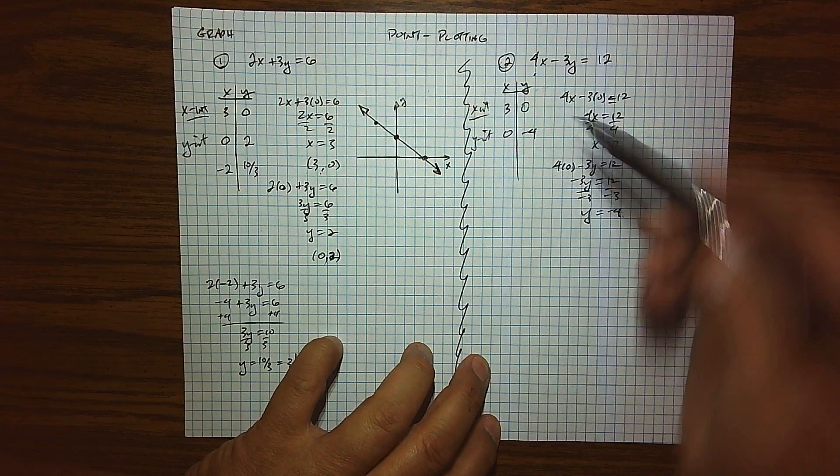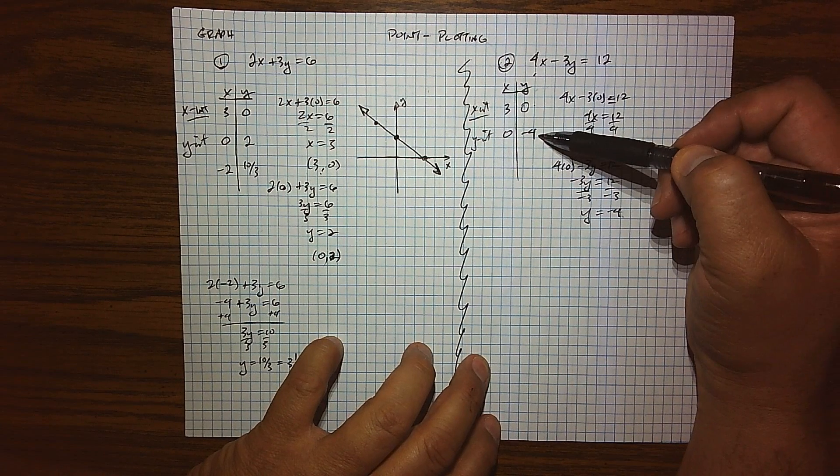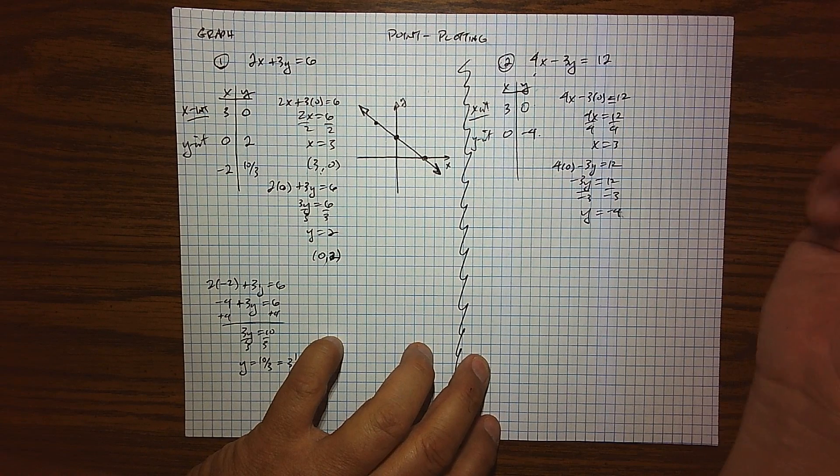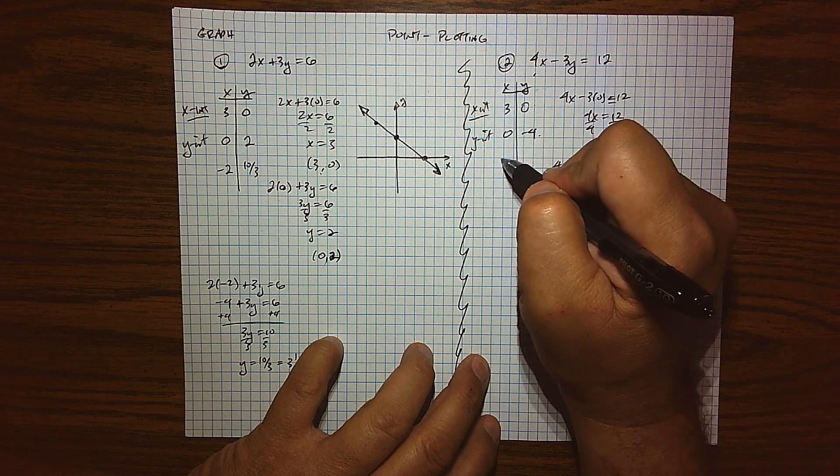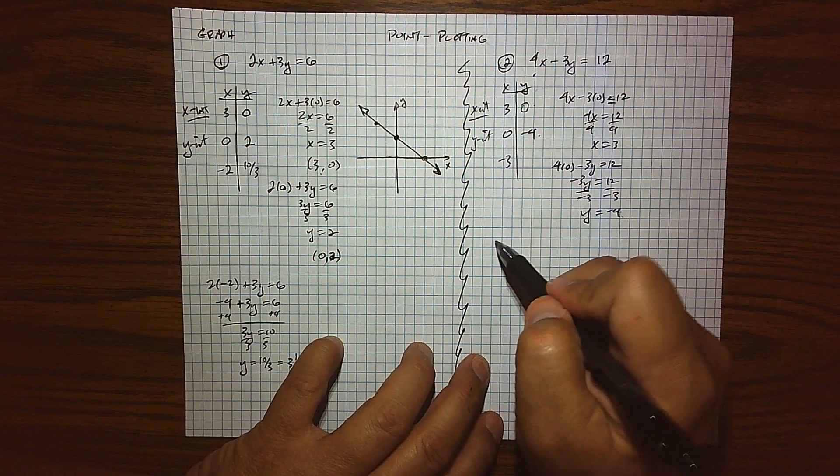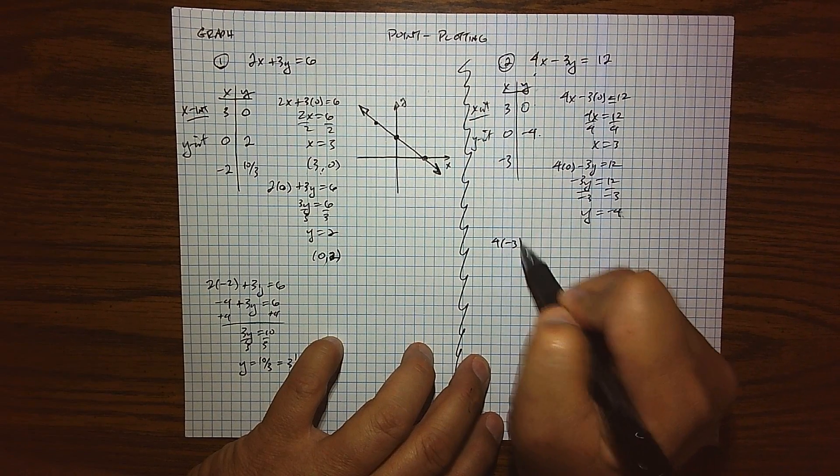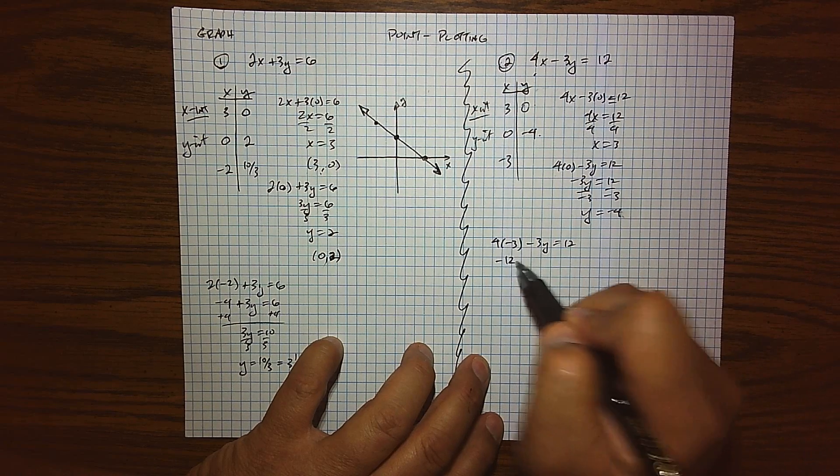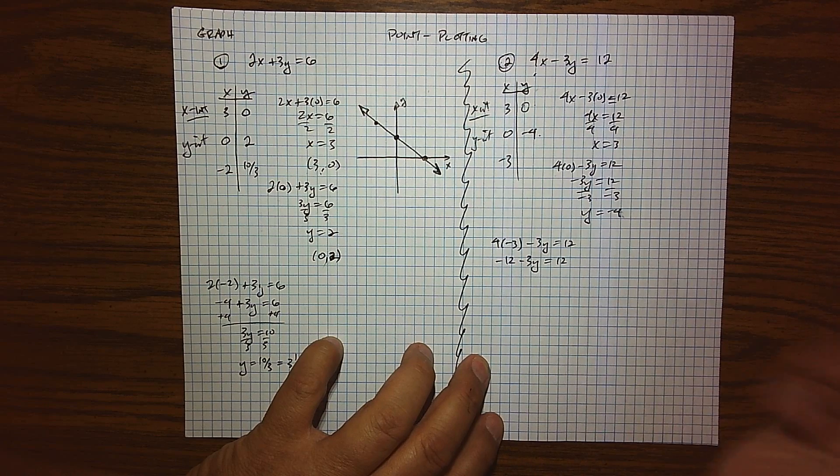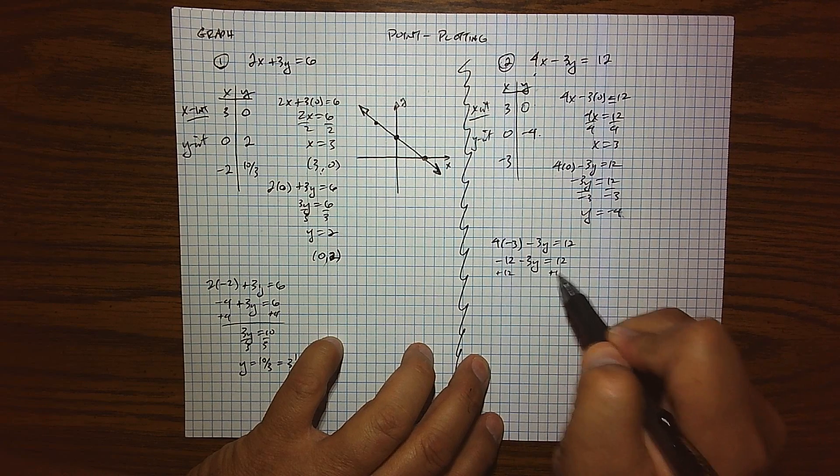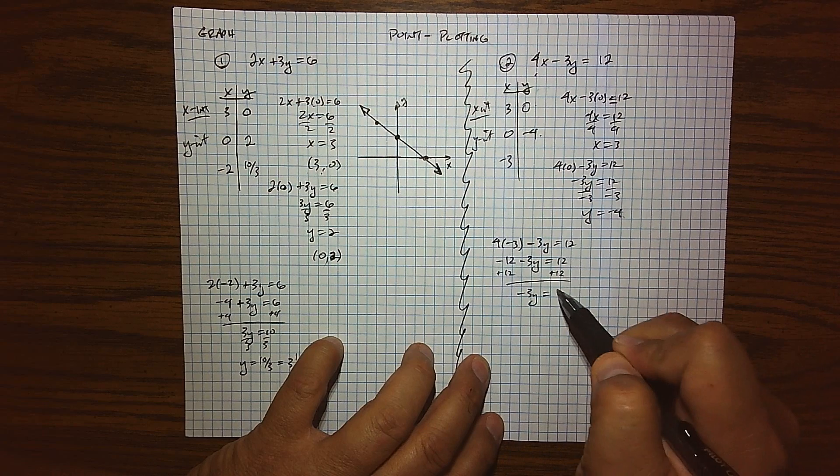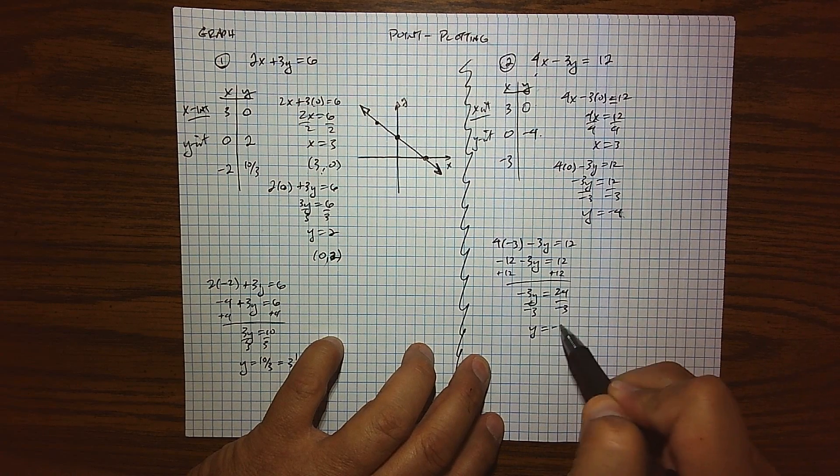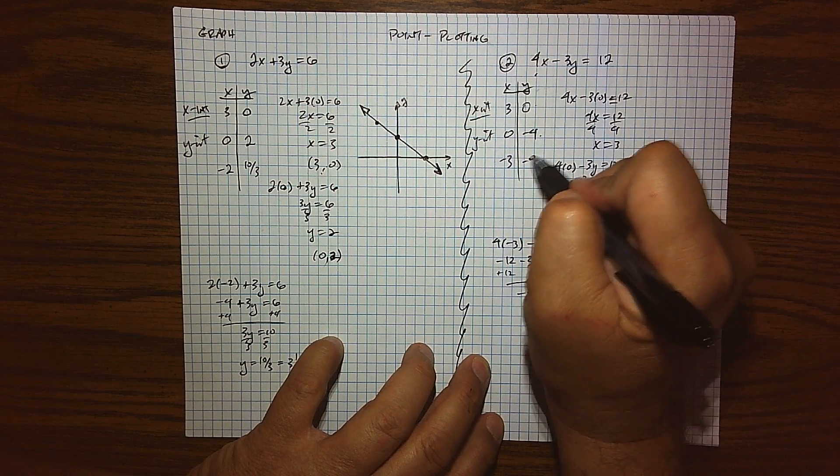So I have the location we're crossing the x-axis, the location we're crossing the y-axis, and now we have to find that third point. And you can use whatever you want. So how about we let x equal negative 3. So when I do that, 4 times negative 3 minus 3y equals 12. This is negative 12 minus 3y equals 12. Add 12 to both sides and we get negative 3y equals 24. Divide by negative 3 and we get y equals negative 8. And so there's my third data point.